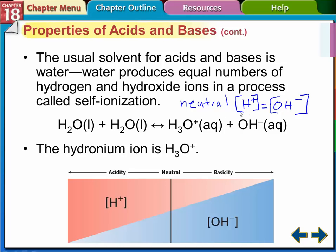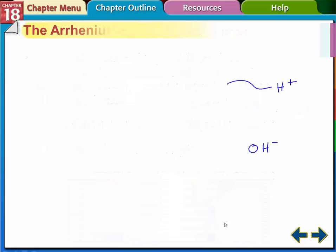We use H-plus interchangeably with the hydronium ion — these two are pretty much interchangeable, although H3O-plus is more technically accurate. Also, hydrogen is just a proton and an electron, so if it loses an electron, all we have left is the proton. So this H-plus ion is often called a proton. The chart here shows: more hydrogen ions means it's an acid; more OH ions means it's a base.